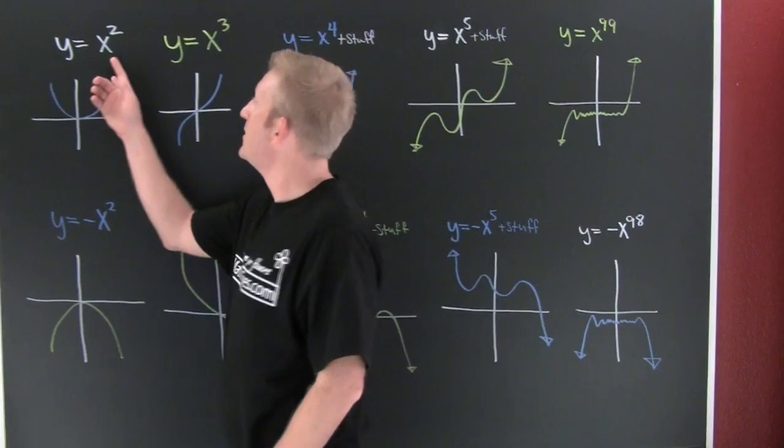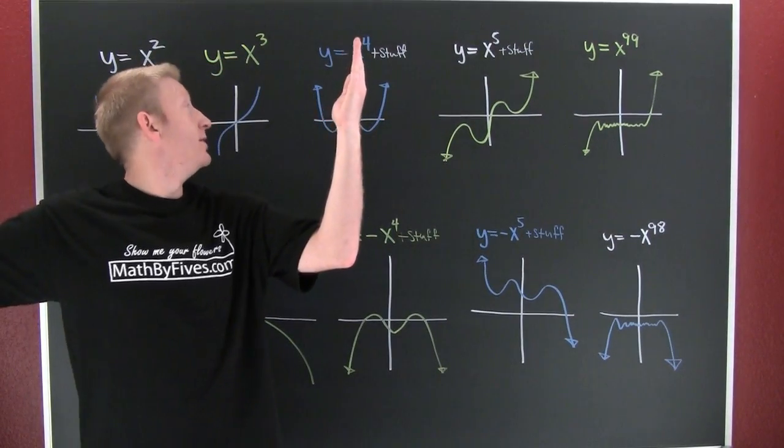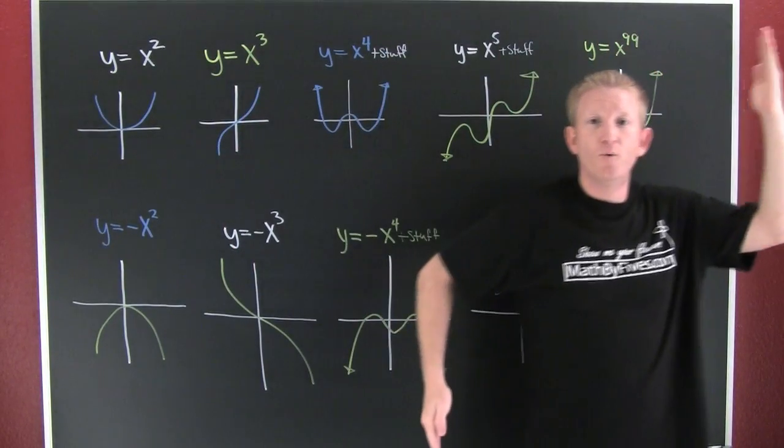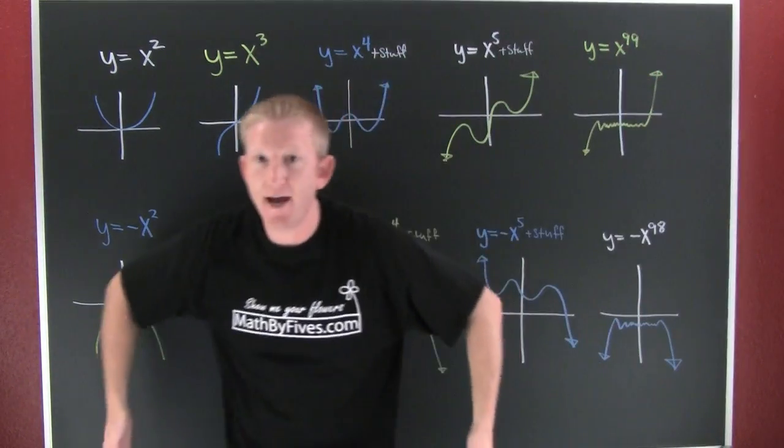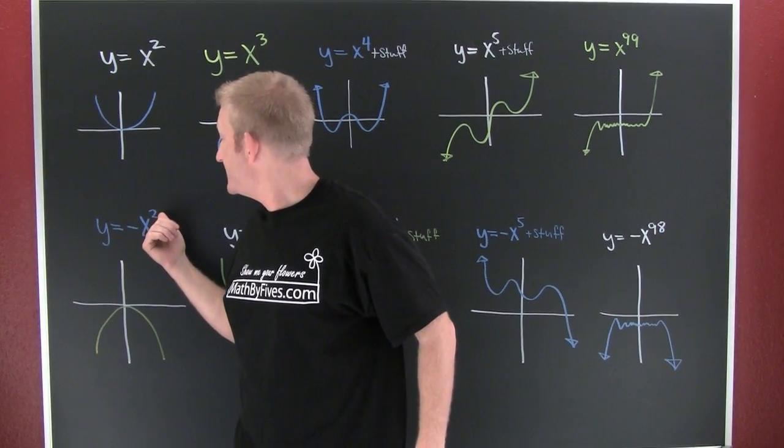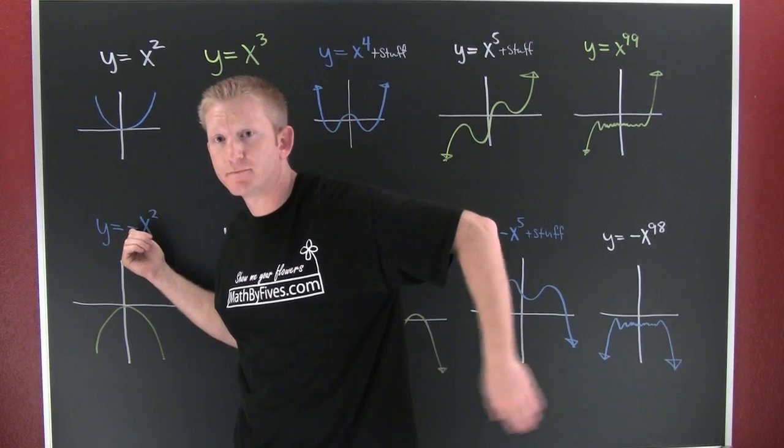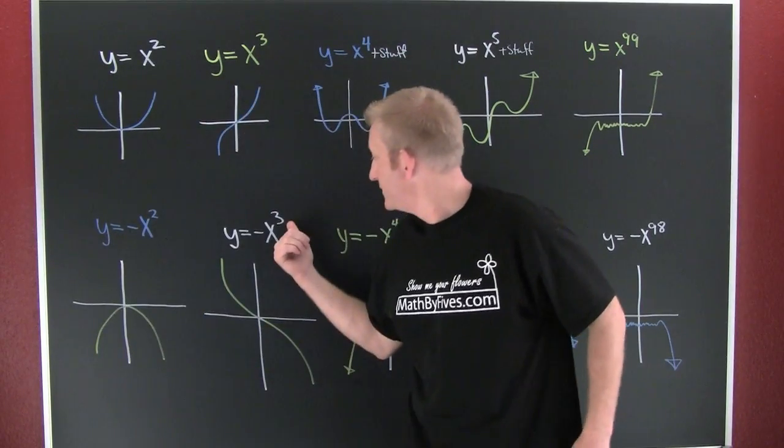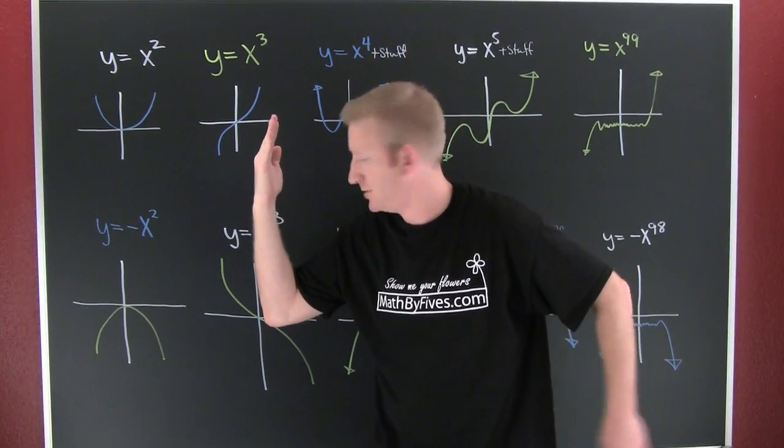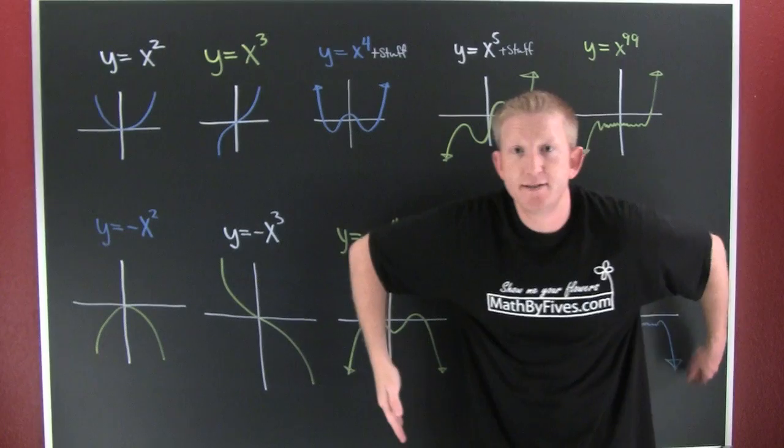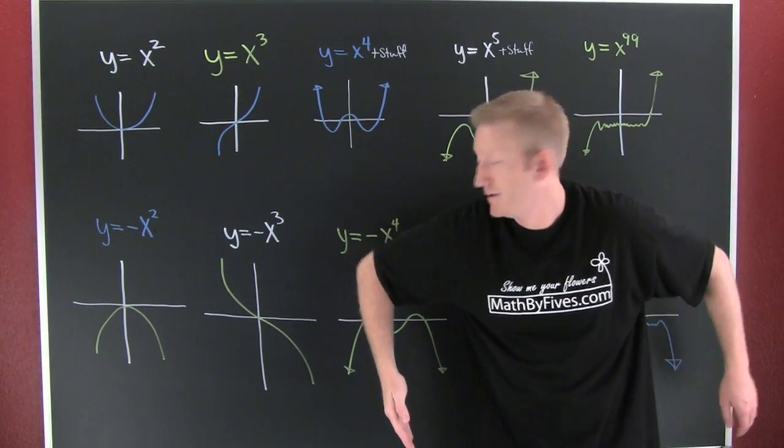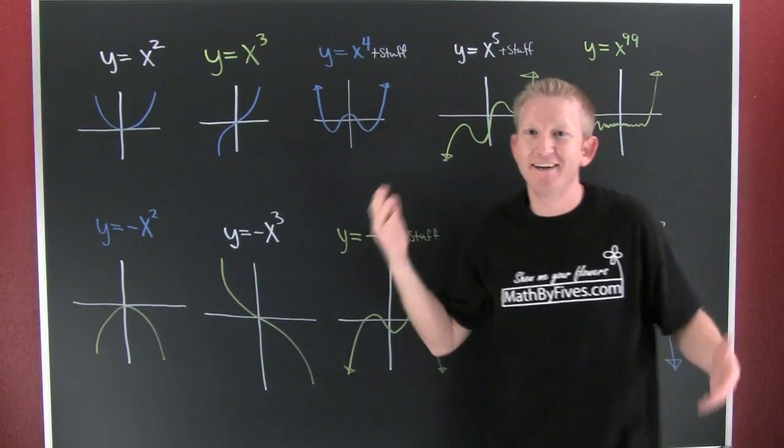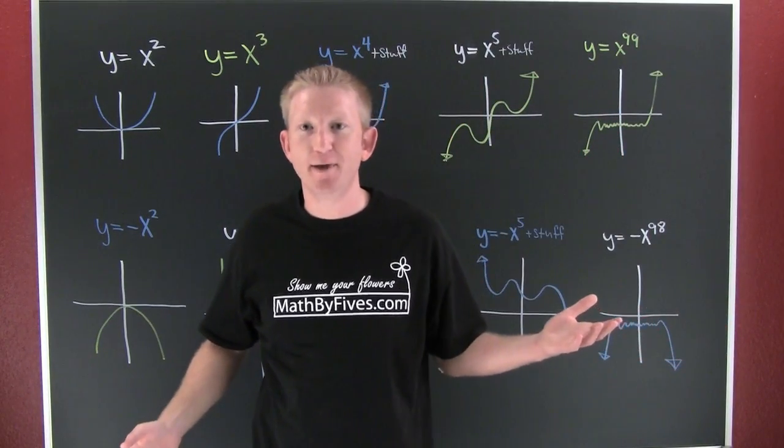So let's go through these one more time. When it's positive and the same, there's up. And then down here it's down. They end the same because it's even and it ends down because the coefficient is negative. Mixed ends down. Same ends down. Opposite ends down. That's about all you need to know about polynomial end behavior.